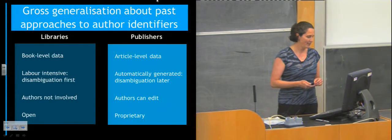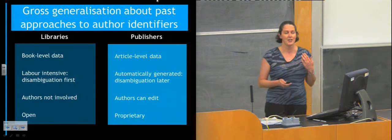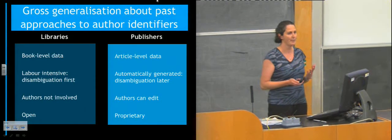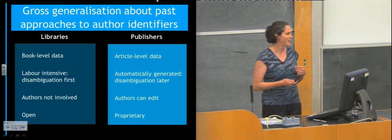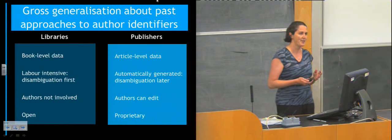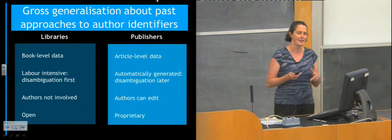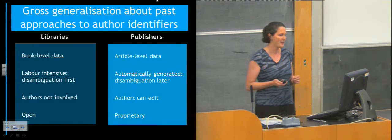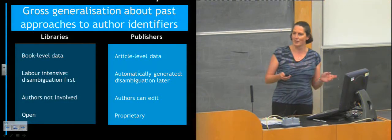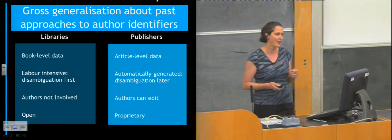Here's a slide with a very gross generalisation about the different approaches to author identification that have been happening in the past. On the left we've got the library approach to authority services, looking at information at the level of the book, doing the work up front on disambiguation, not involving authors themselves in the process at all. On the other side we've got the publisher approach — things like the Scopus and Researcher ID services. Publishers have been looking at article-level data more often, generating things automatically and then relying on authors to come along and sort problems out.